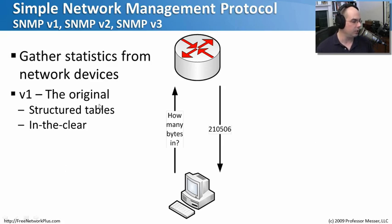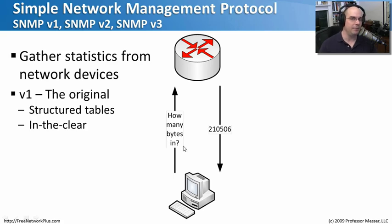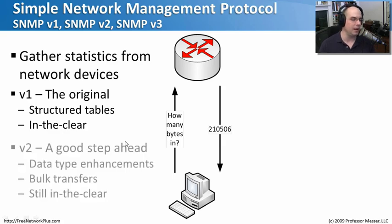SNMP version one was the original, and it uses a structured table so you can ask for very common things from devices and receive common responses. For instance, you can ask how many bytes have gone into a particular interface on the router, and the router responds with a number. Every device knows what numbered strings to expect and what responses to send back. However, SNMP version one passes this information in the clear — it's not encrypted.